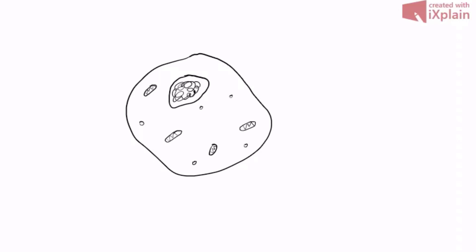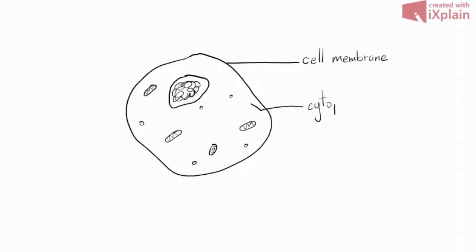Notice my lines are very simple. When labeling, my label line is horizontal. The first thing I'm labeling is the cell membrane. The space inside the cell in which everything is embedded is called the cytoplasm. Even if the line isn't perfectly straight, it must end horizontally.